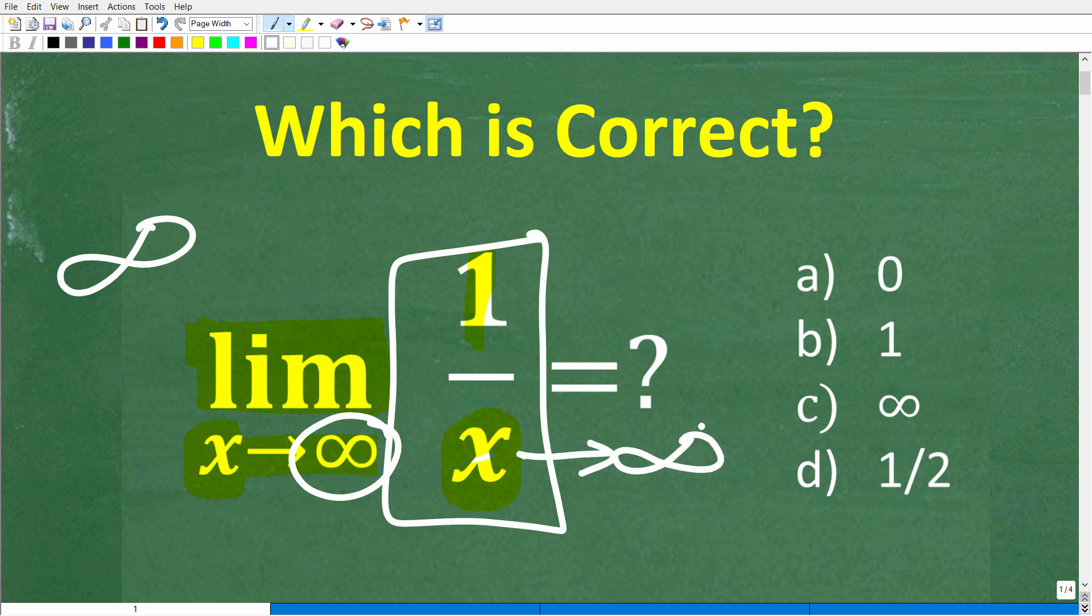All right, so that is the problem. But we do have a multiple choice question here. Let's take a look at our answers. So A is 0, B is 1, C is infinity, and D is 1 half. All you need here is some basic math skills and a little bit of logic to figure this out. But if you have the answer, go ahead and put that into the comment section.